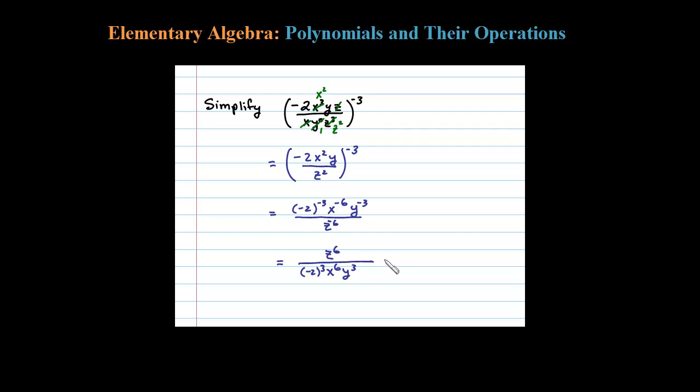For the last step, just clean it up. What I'll be left with here then is z to the sixth all over negative 2 to the third is negative 2 times itself three times, and that's negative 8 x to the sixth y to the third.